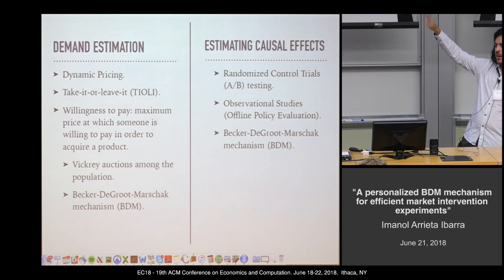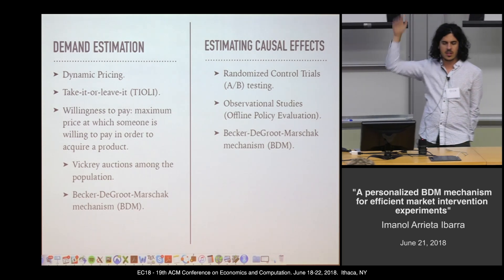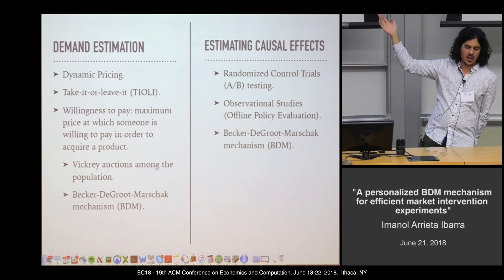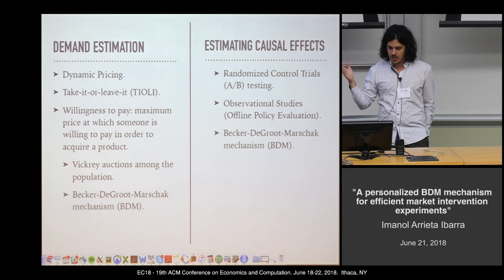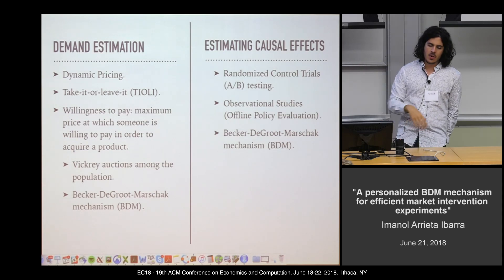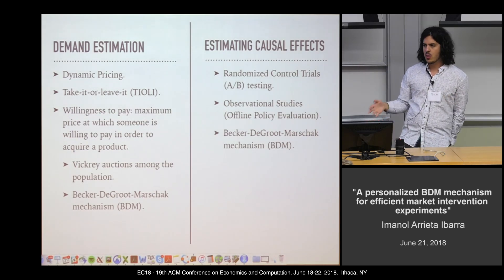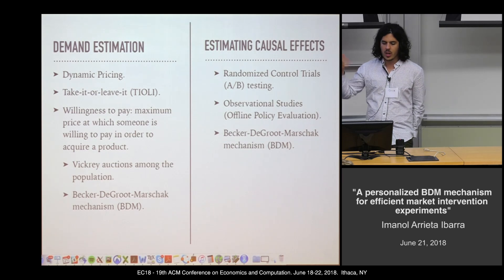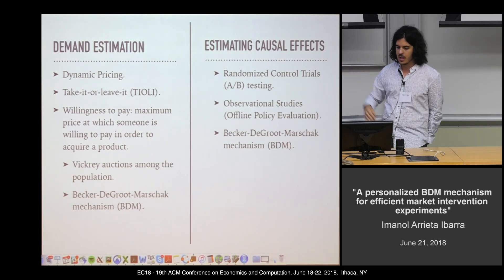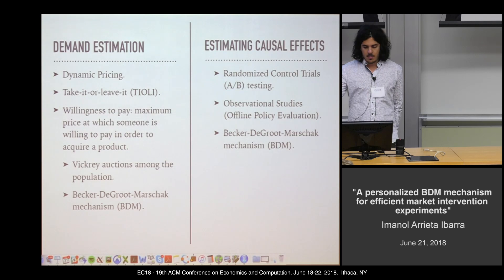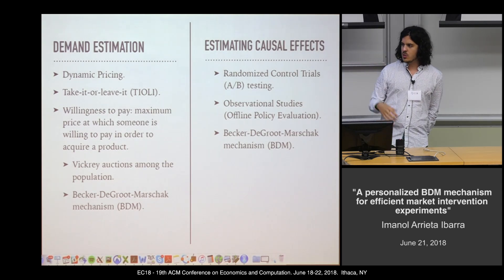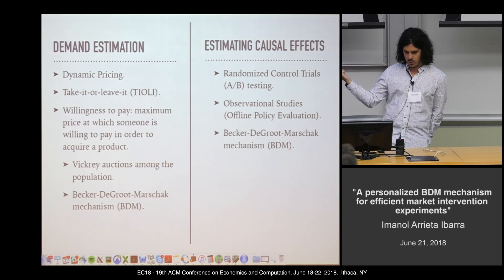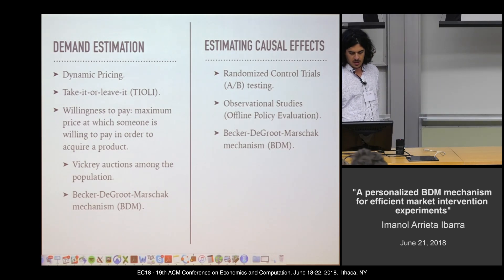Our two objectives are demand estimation and causal effects. For demand estimation, we can do dynamic pricing, take-it-or-leave-it strategies, or go deeper and try to estimate a user's willingness to pay using a second price auction — for example, a Vickrey auction or the BDM mechanism. For estimating causal effects, we can run an A/B test, do offline policy evaluations, or again use the BDM mechanism, which I'll explain now.